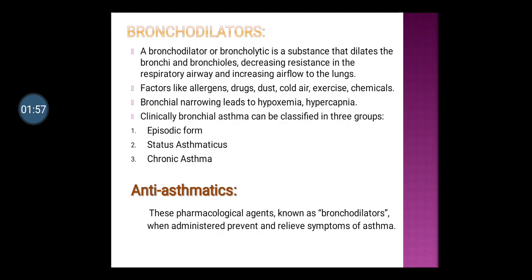Bronchial asthma can be classified into three groups: first is the episodic form, second is status asthmaticus, and third is chronic asthma.